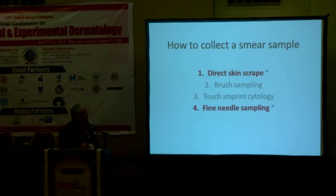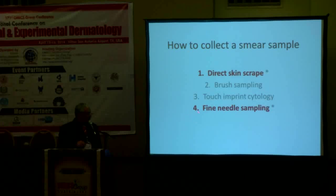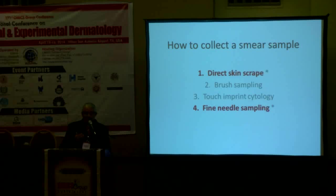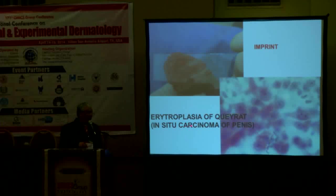How to collect a smear sample? We have four methods: number one, direct skin scrape; number two, brush sampling; number three, touch imprint cytology; and number four, fine needle sampling. I use mostly method one and method four because I can collect many cells to examine. This is the imprint method, which we can use to diagnose erythroplasia of Queyrat and carcinoma of the penis.